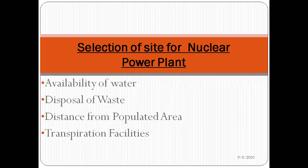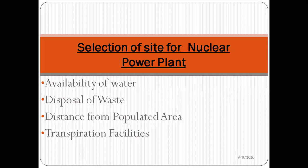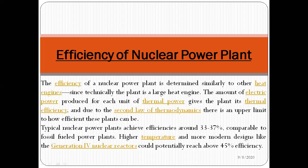Third, nuclear power plants should be installed at a distance from populated areas because nuclear fuel contains radioactive elements that are very dangerous to human beings. Fourth, good transportation facilities must be available and well-developed at the selected site. These are the main site specification factors for a nuclear power plant.